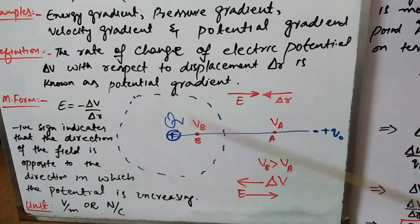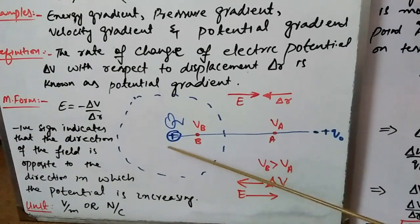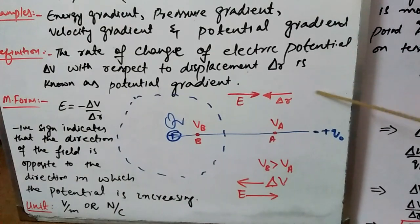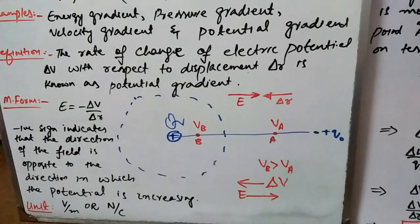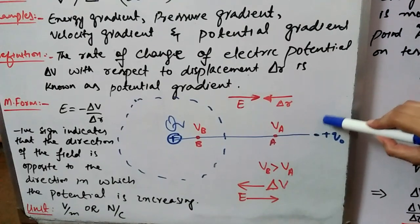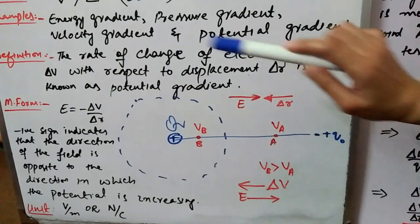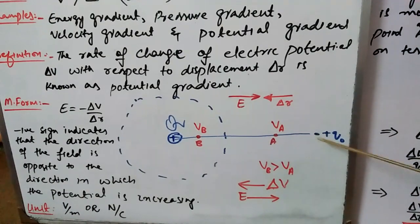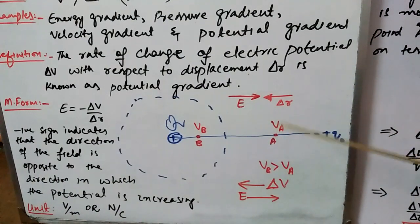Keep in mind: the direction of the electric field of the source charge is in this direction, whereas the direction of the displacement — the movement of the test charge — is from point B to point A. So the electric field of the source charge and the displacement of the test charge are in opposite directions.